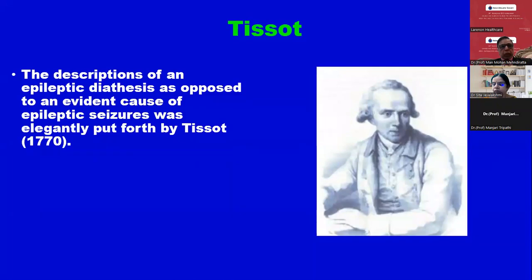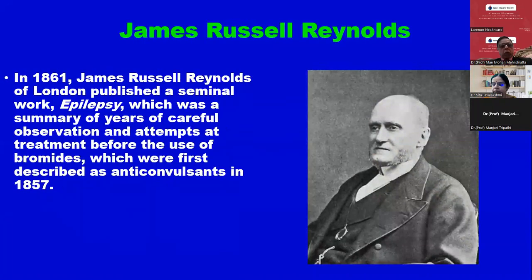Tissot elegantly put forth the description of an epileptic diathesis as opposed to an evident cause of epileptic seizure. In 1861, James Russell Reynolds of London published a seminal work on epilepsy, which was a summary of years of careful observation and attempts at treatment before the use of bromide in 1857.